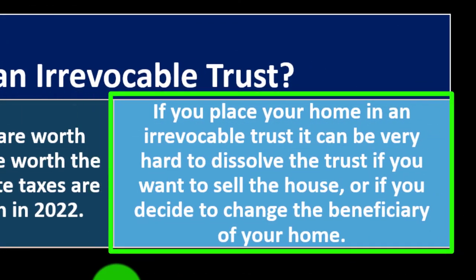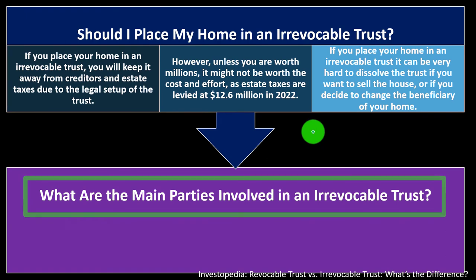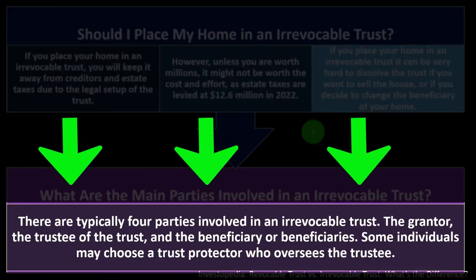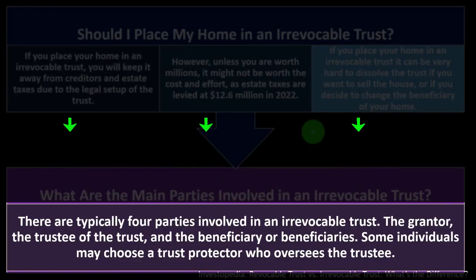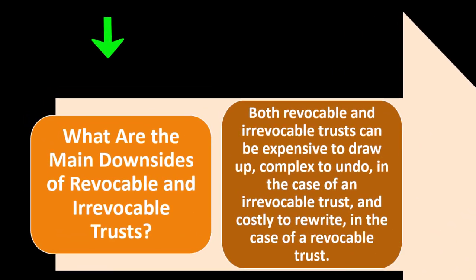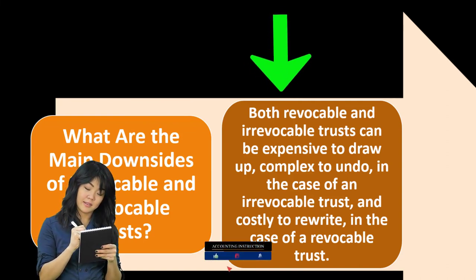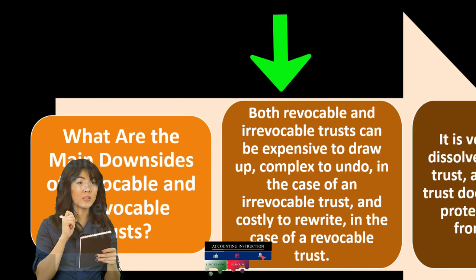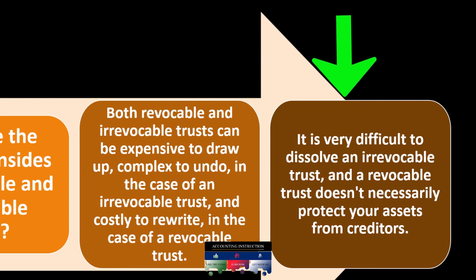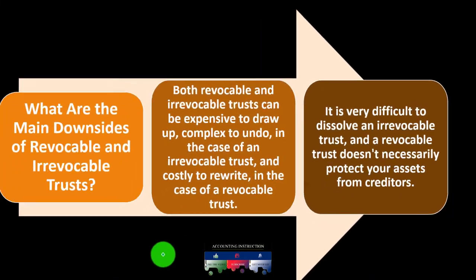If you place your home in an irrevocable trust, it can be very hard to dissolve the trust if you want to sell the house or change the beneficiary. There are typically four parties involved in an irrevocable trust: the grantor, the trustee, and the beneficiary or beneficiaries — and some individuals may also choose a trust protector who oversees the trustee. Both revocable and irrevocable trusts can be expensive to draw up; irrevocable trusts are difficult to dissolve, and a revocable trust doesn't necessarily protect your assets from creditors.